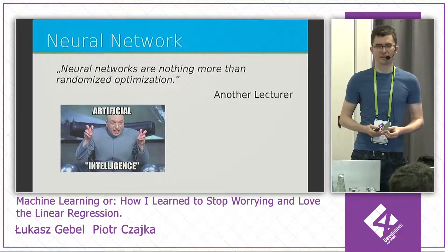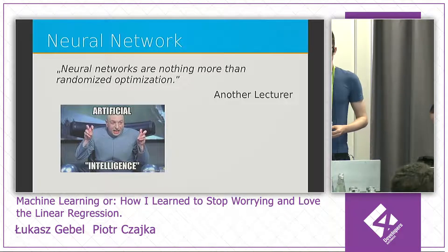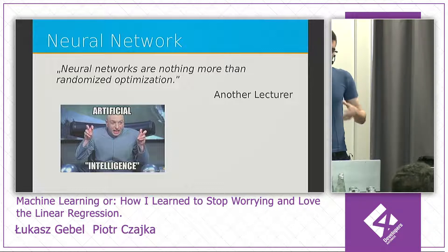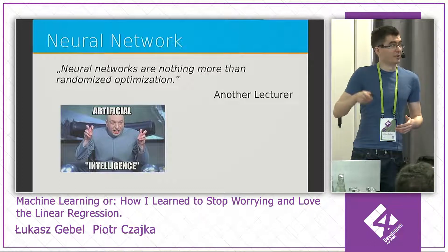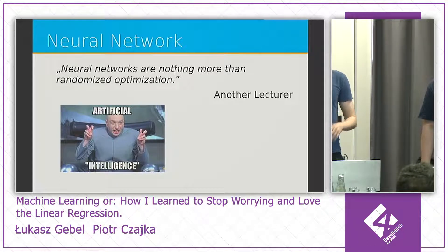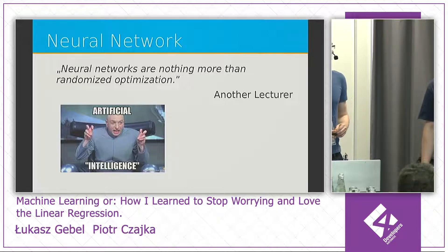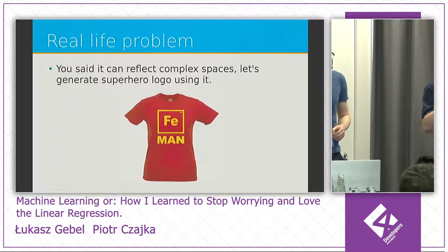Machine learning and all this AI stuff is really nothing magical — it's simply a lot of more or less complicated math. Every time you read about it, you should remember it's really a lot of multiplication, derivatives, and so on. But we still think it's very cool — it can solve really complicated problems, and it's super fun.